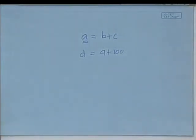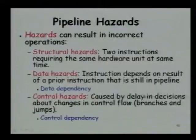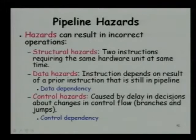We can also have control hazards when there are branch instructions. The outcome of the branch would determine which instruction would be executed next. If the branch decision is true, something will be executed; if the branch decision is false, some other instruction will be executed. So we have to postpone fetching an instruction until we know the branch outcome. This is an example of a control dependency.